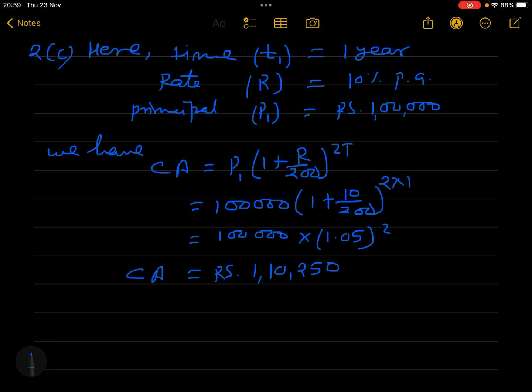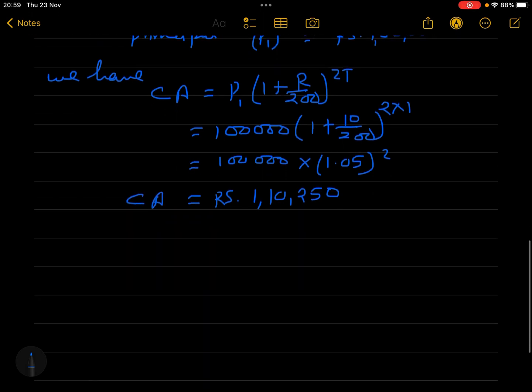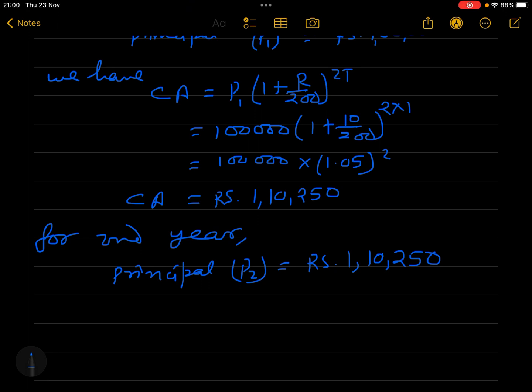Now if you calculate, you will get rupees 1,10,250. This compound amount will be the principal for the second year. Now for the second year, principal P2 will be rupees 1,10,250. He will withdraw this money from the bank and again deposit the same money for quarterly compound interest.